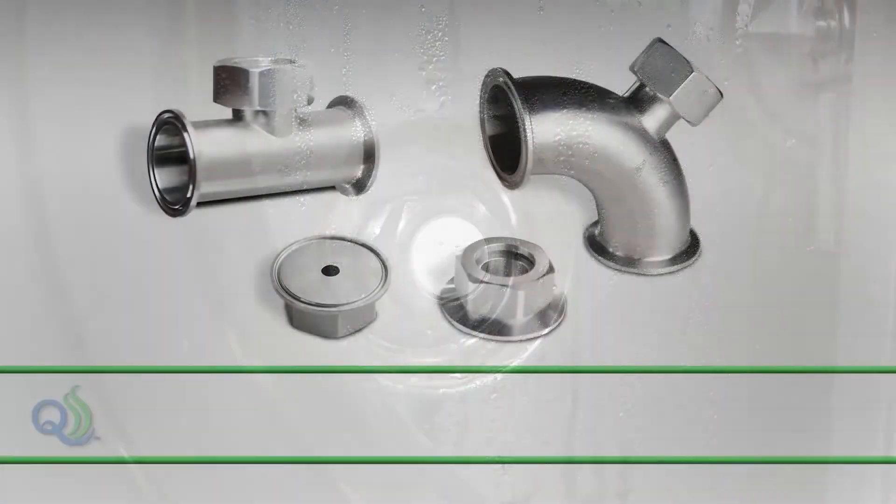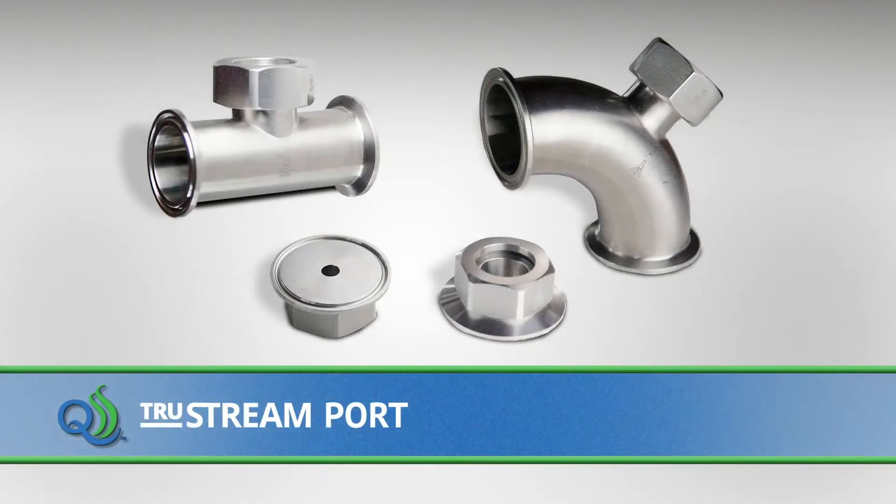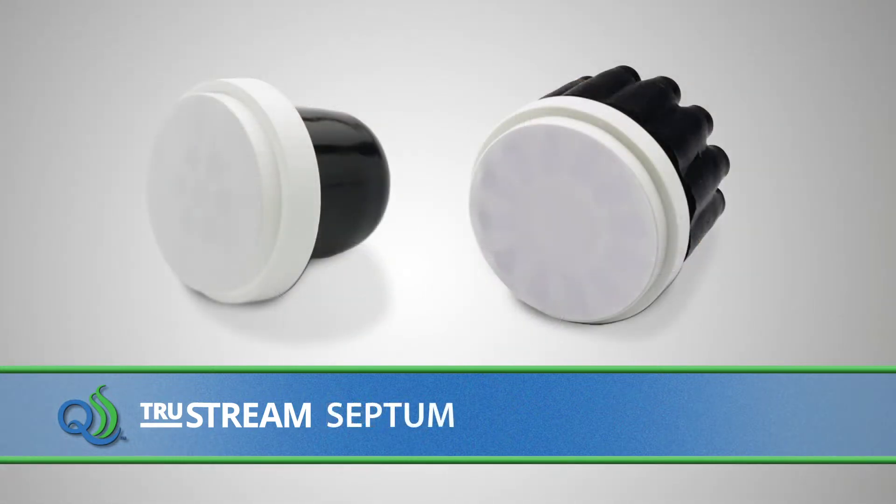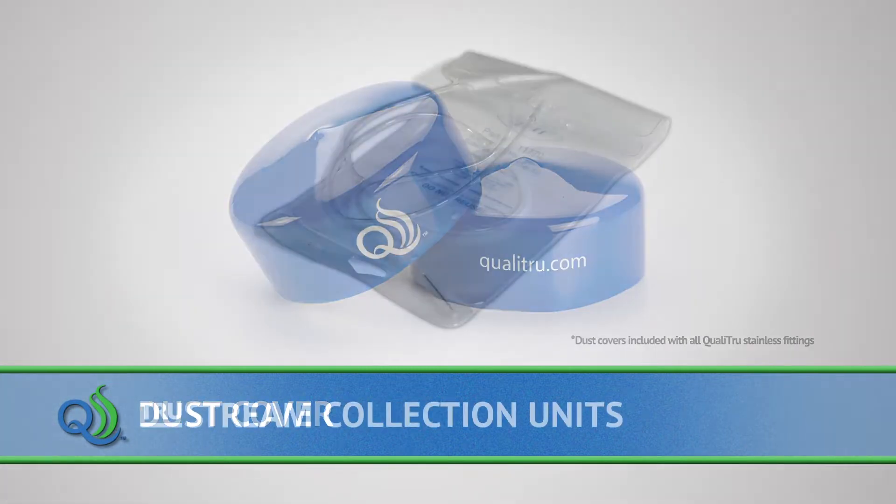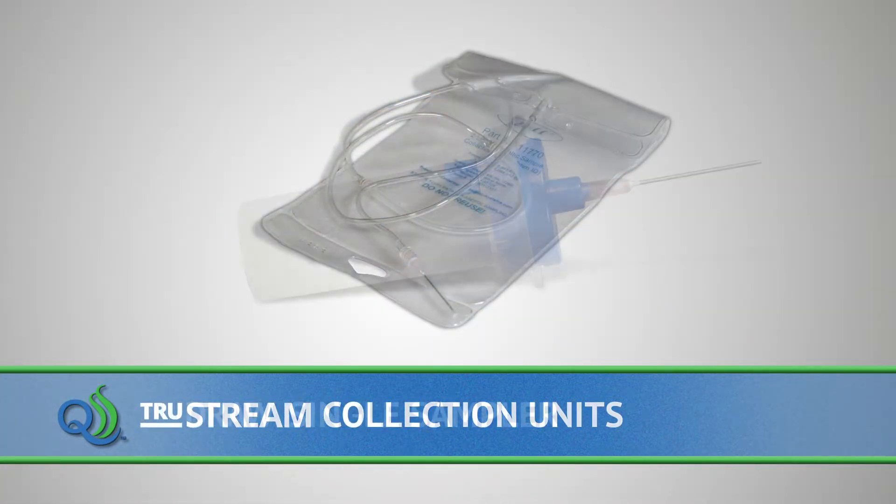The items needed for this process include a TrueStream 7 or TrueStream 12 stainless steel sanitary sampling port, a 7 or 12 channel QualiTrue sterile septum, a blue dust cover, and a TrueStream collection unit or TrueDraw single sampler.